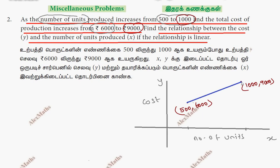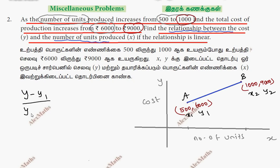If we join these two points, it's a linear relationship. To find the relationship between the cost and the number of units produced, we use the two-point formula. In the line equation, this one is (x1, y1) and this one is (x2, y2). The two-point formula is: y minus y1 divided by y2 minus y1 equals x minus x1 divided by x2 minus x1.